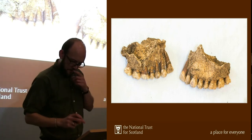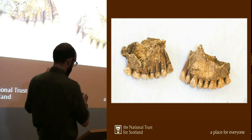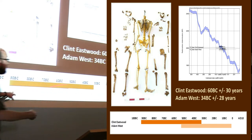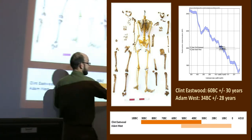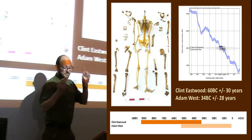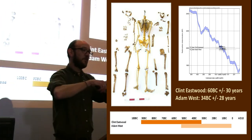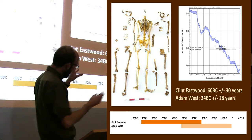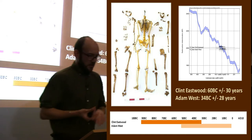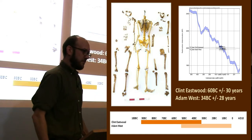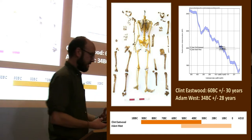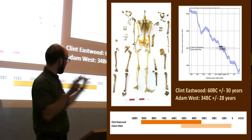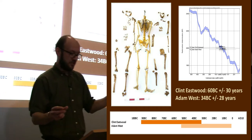They've both got exactly the same deformity, and this isn't due to a lifestyle or anything — this is inherited. The C14 range shows there's a slim chance that they actually overlap in terms of their lifetimes. So we've got the same inherited deformities in the same burial — are we looking at a father-and-son relationship? Or at the more extreme end of the date range, we're looking at a grandfather-and-grandson relationship.